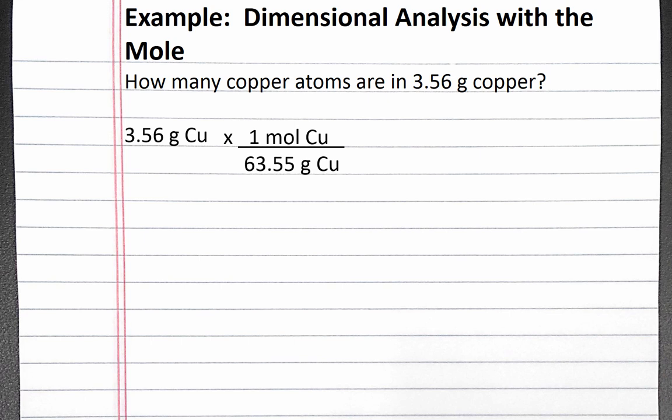Then we can use Avogadro's number to convert from moles of copper atoms to just copper atoms. There are 6.022 times 10 to the 23rd copper atoms in one mole of copper atoms. One mole of copper atoms goes on the bottom to cancel out our current units.